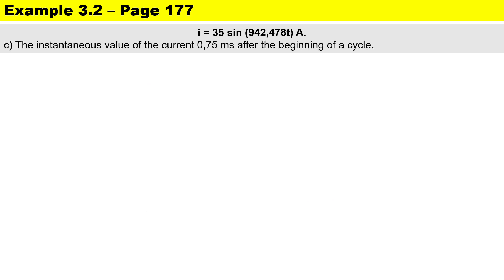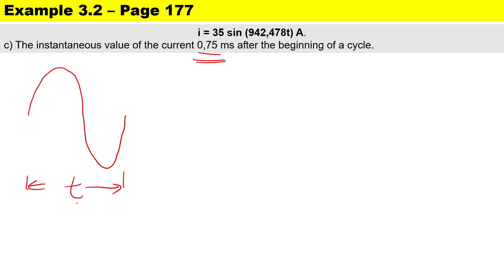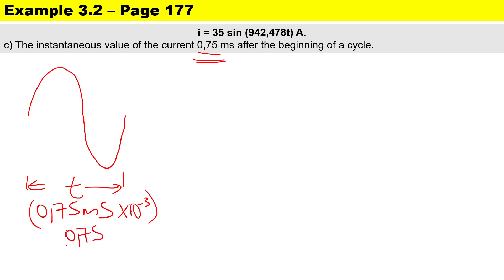For part C, we calculate the instantaneous value of the current 0.75 milliseconds after the beginning of the cycle. Here's the waveform — you can use time as your reference. They say approximately 0.75 milliseconds. To convert milliseconds to seconds, multiply by 10 to the power of minus 3, or I prefer to write it as a fraction: 0.75 divided by 1000 seconds.